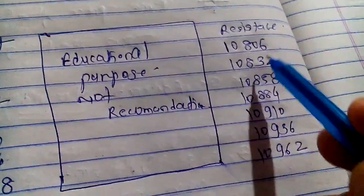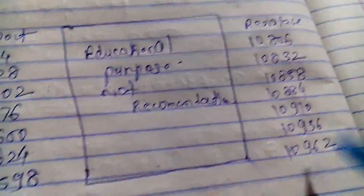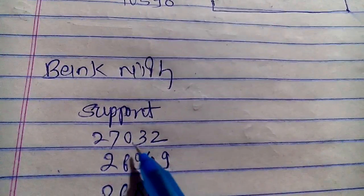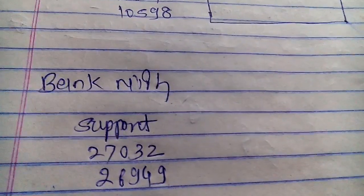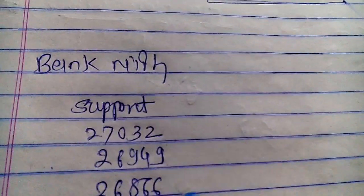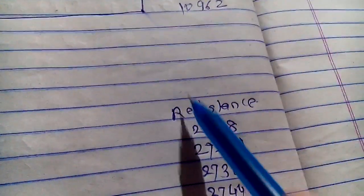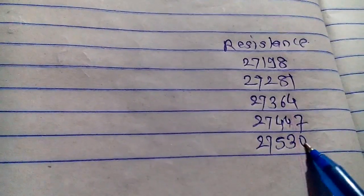Nifty resistance levels: 10,832 / 10,858 / 10,884 / 10,910 / 10,936 / 10,962. Educational purpose, not a recommendation. Bank Nifty supports: 27,032 / 26,949 / 26,866 / 26,783 / 26,700. Bank Nifty resistance: 27,198 / 27,281 / 27,364 / 27,447 / 27,530.